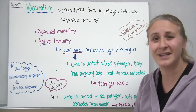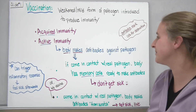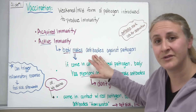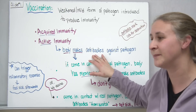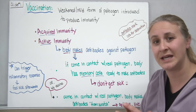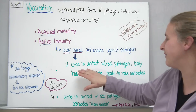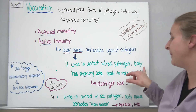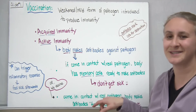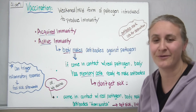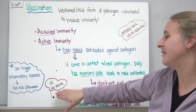This is similar to how enzymes are specific for their substrate. These antibodies float through your bloodstream, and if they recognize a particular pathogen based on its shape, they bind to it to mark it for other immune system cells to destroy. If you come in contact with a real pathogen, the body will have memory cells ready to make antibodies again, so those memory cells help you not get sick when that pathogen enters the body.